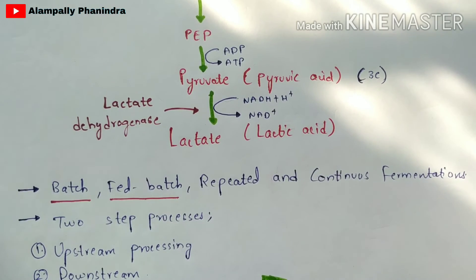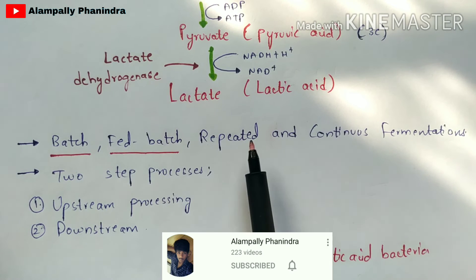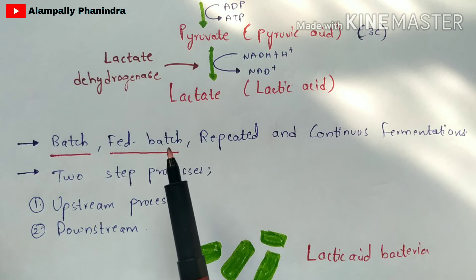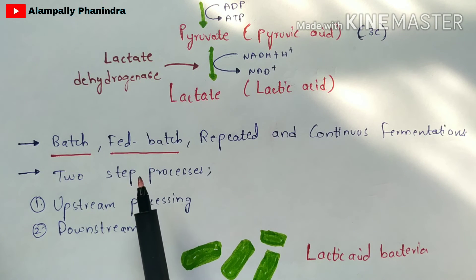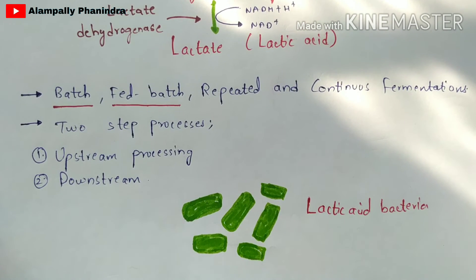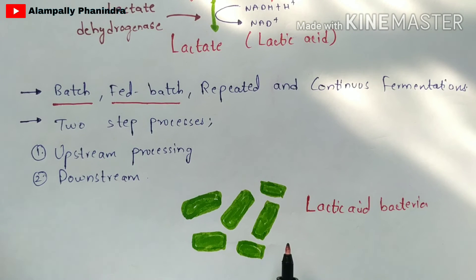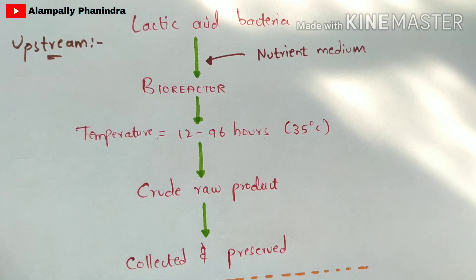Lactic acid can be produced by batch fermentation, fed-batch fermentation, and continuous fermentation — among these, batch and fed-batch fermentation are most widely used. This is a two-step process involving upstream processing and downstream processing. Lactic acid bacteria belong to gram-positive bacteria; they are rod-shaped, and some are spherical, which are called cocci.